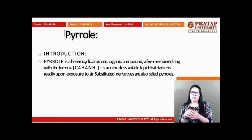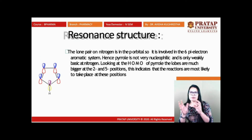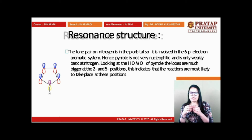Substituted derivatives are also called pyroles — you can find methyl pyrrole, alkoxy pyrrole, ethyl pyrrole, and other substituted pyroles. Pyrrole itself is an aromatic compound with unique biological and chemical activity. Regarding the resonating structures of pyrrole: the lone pair on nitrogen is in the p orbital, so it is involved in the pi system. The two double bonds provide four pi electrons, and the two lone pair electrons on nitrogen provide two more, giving six pi electrons total. As per Hückel's rule it is aromatic. Hence pyrrole is not very nucleophilic and is only weakly basic at nitrogen.